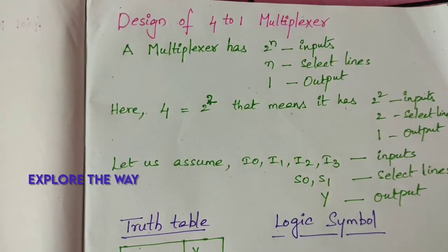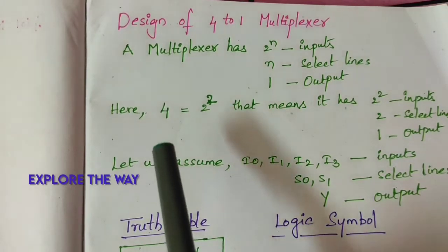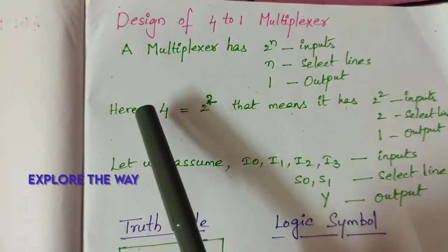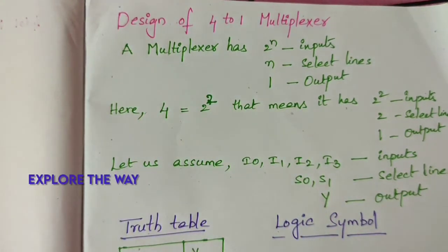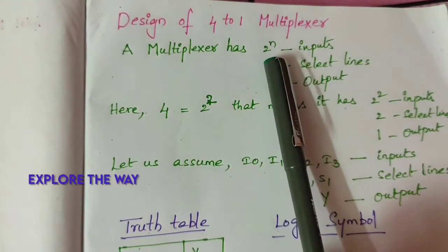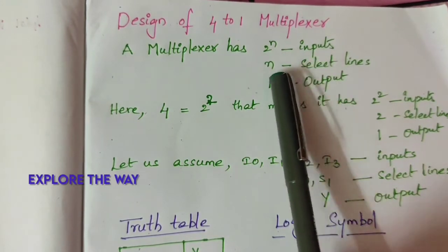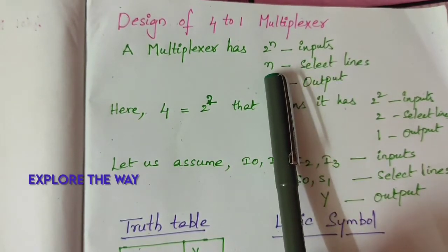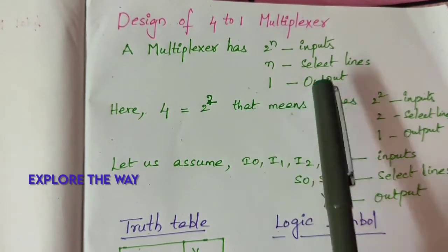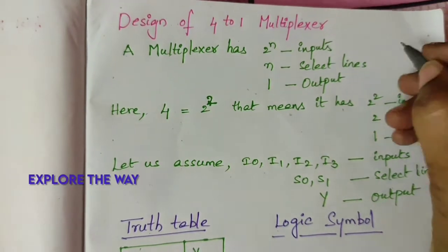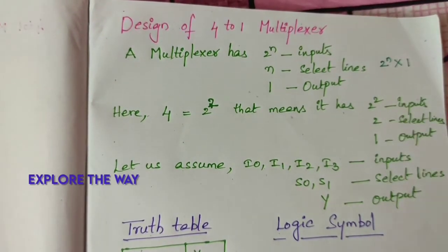In this video, I will explain the design of a 4-to-1 multiplexer. Generally, a multiplexer has 2 to the power of n number of inputs, n select lines, and 1 output. We call it a 2-to-the-power-of-n by 1 multiplexer.